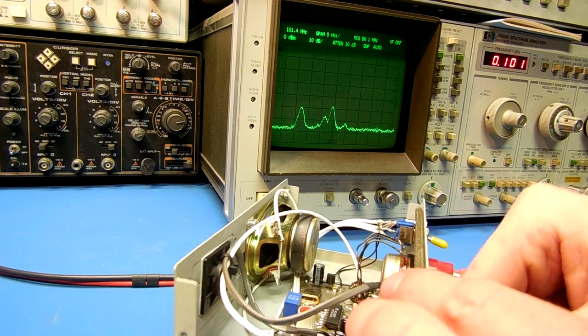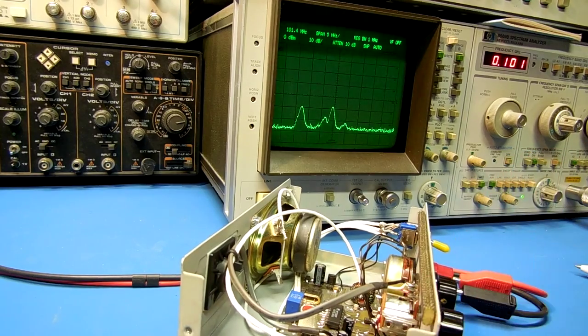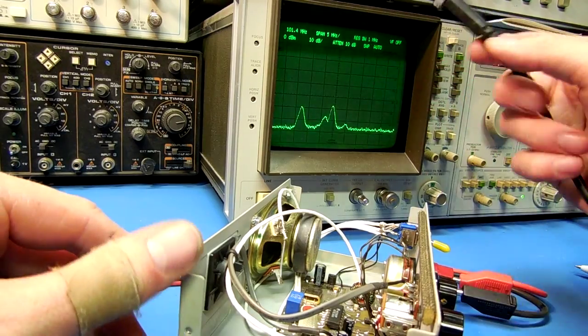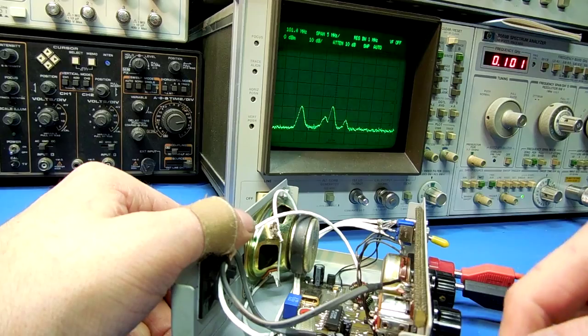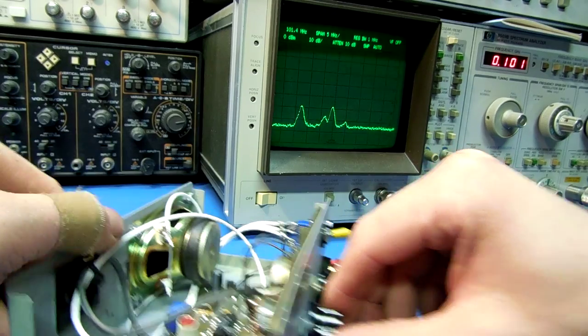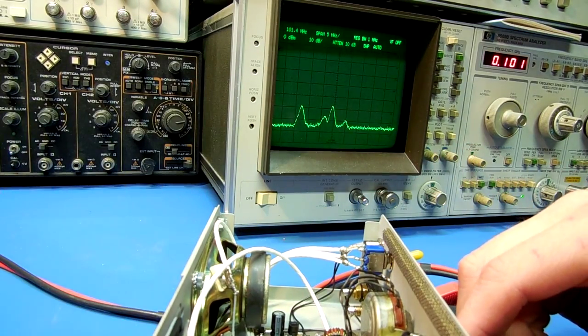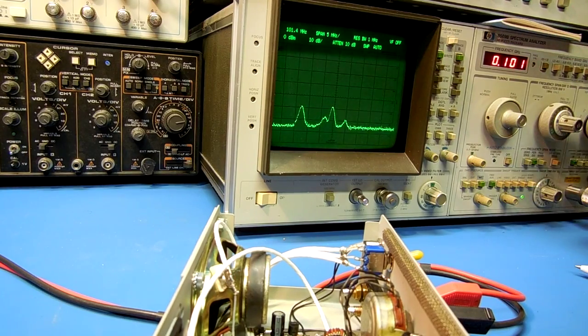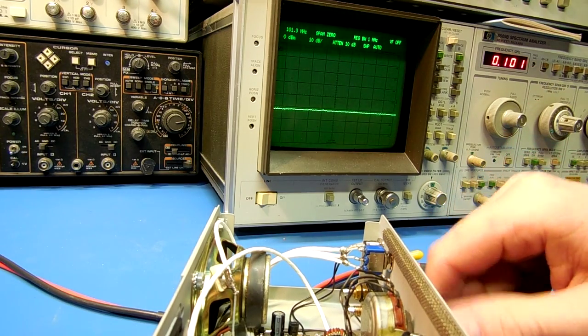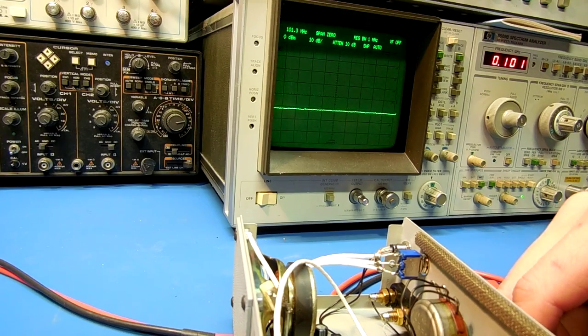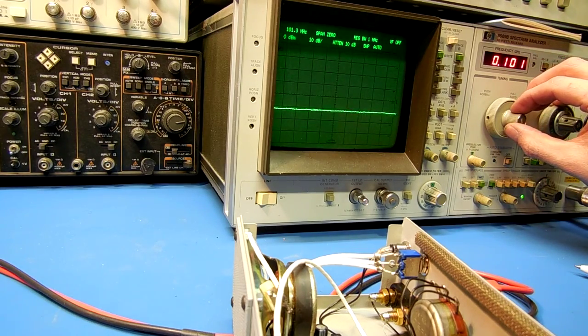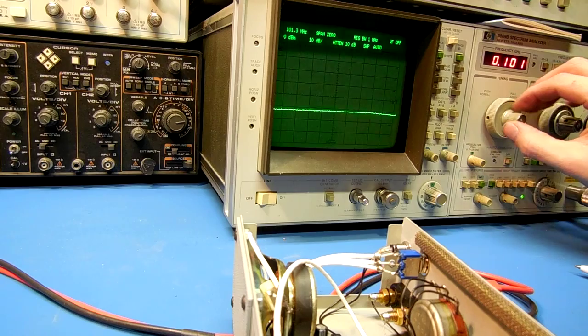Now for our spectrum analyzer output. This is going to the 21.4 megahertz IF output on the back of my HP 8569B. I'm going to try to tune in a local FM broadcast signal. We have to switch over to zero span.